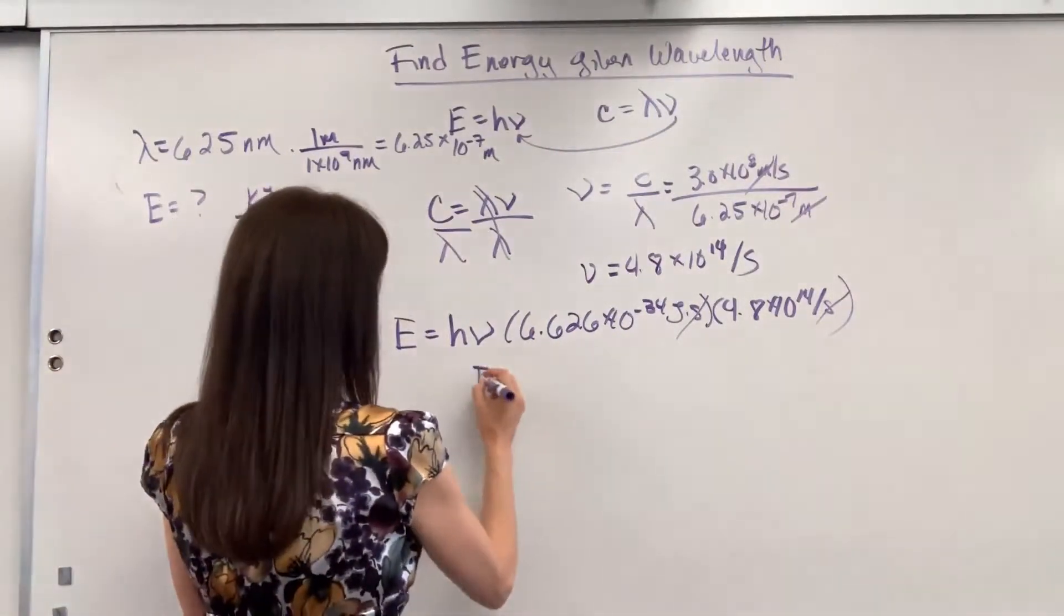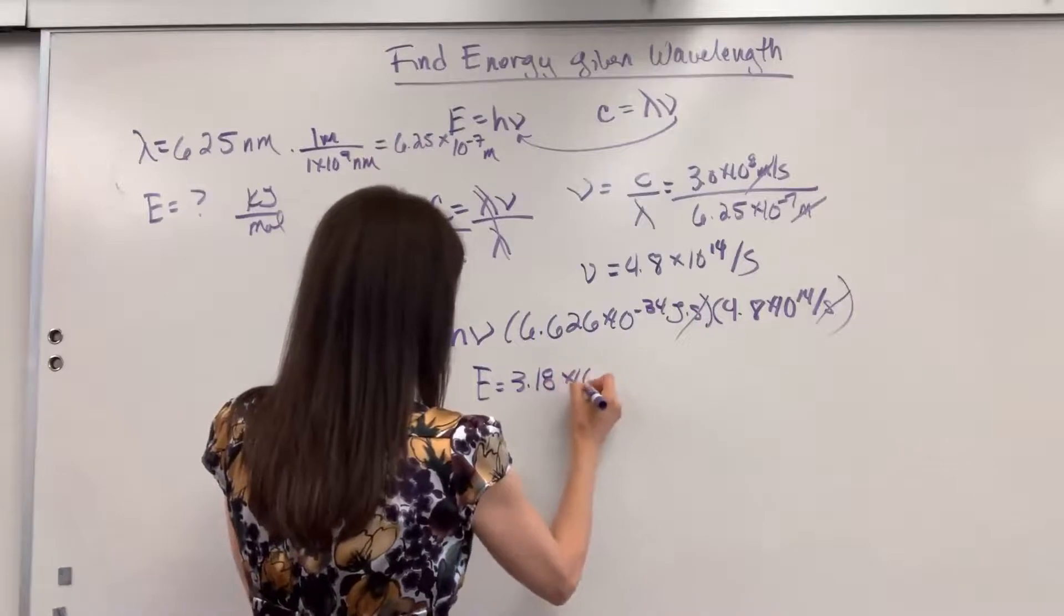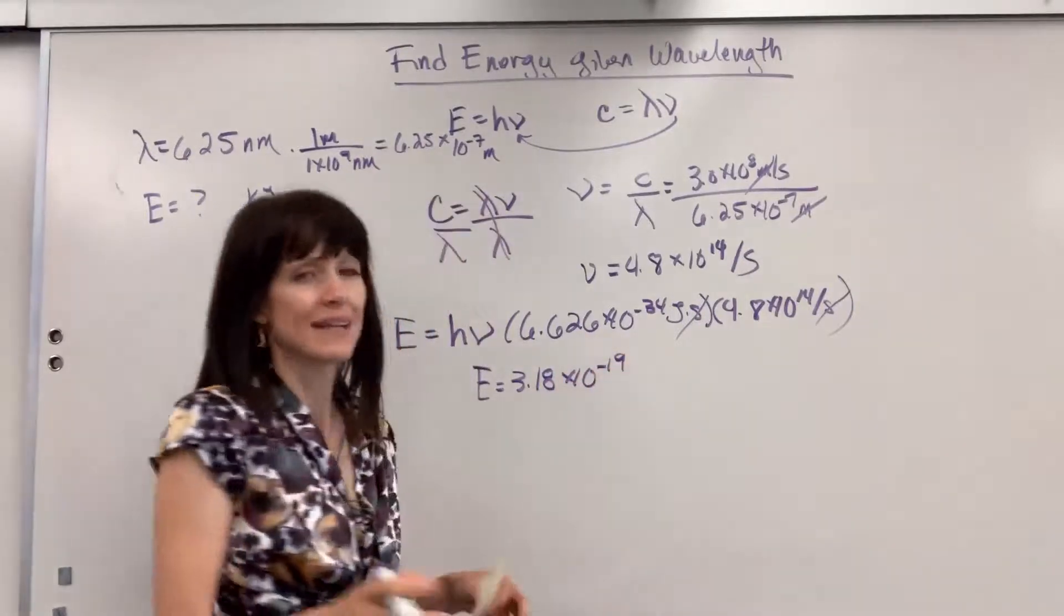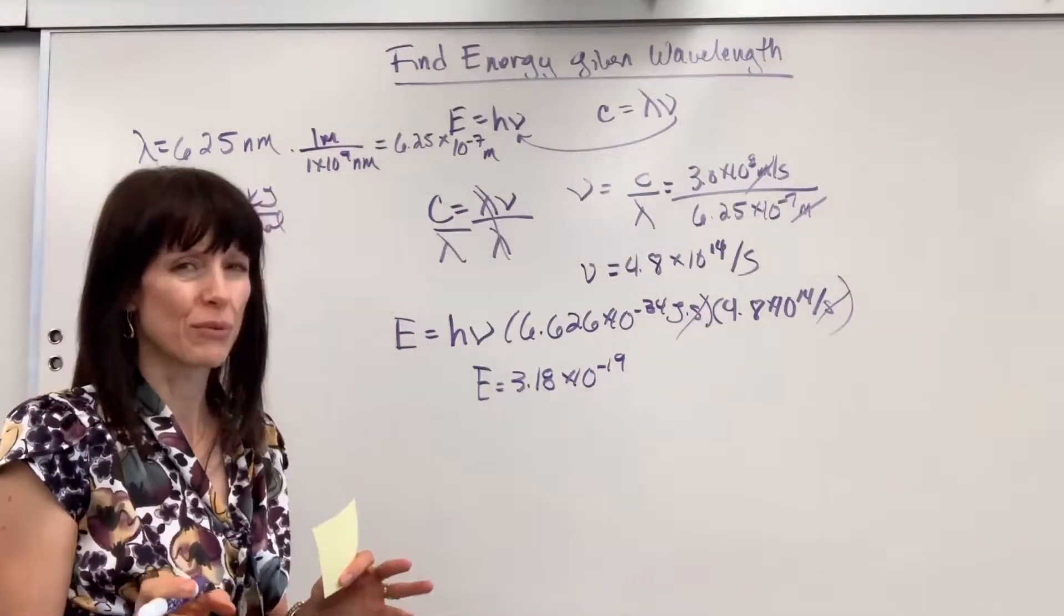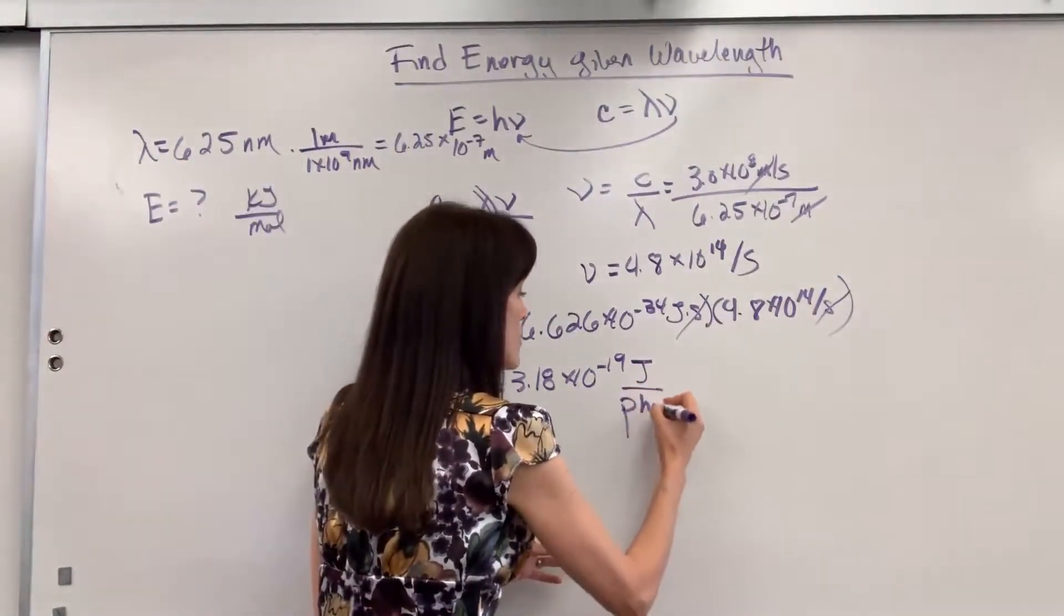And the answer for this, E is 3.18 times 10 to the minus 19. And again, the unit, be so careful, what's the unit for energy?